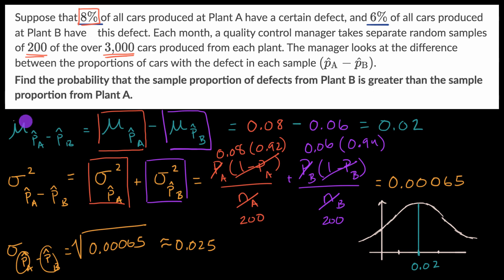So in this situation, what we want to do is find the probability, given what we already know about this sampling distribution's mean and standard deviation and shape, we want to find the probability that the sample proportion of defects from plant B is greater than the sample proportion from plant A. So pause this video and see if you can figure this out. All right, now let's do this together.